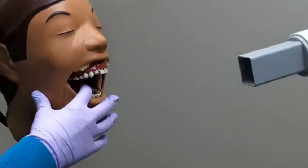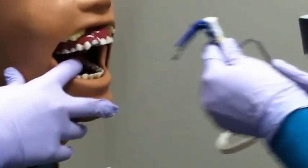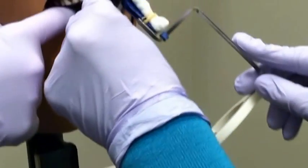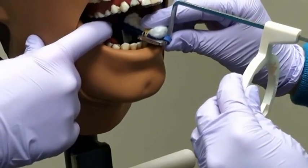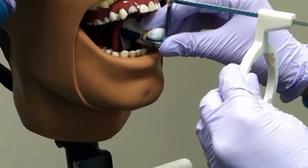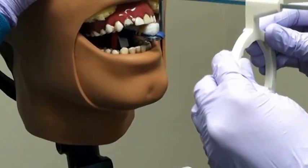Have the patient open and place the film in the mouth, lining it up so that the film is behind the lateral incisor and canine. When the film is lined up, have the patient bite down.